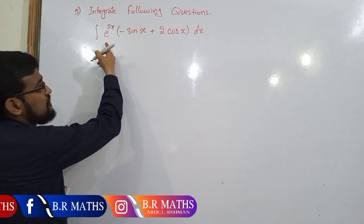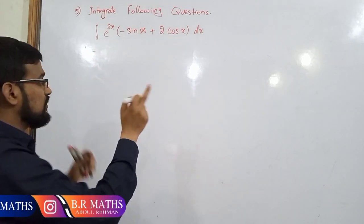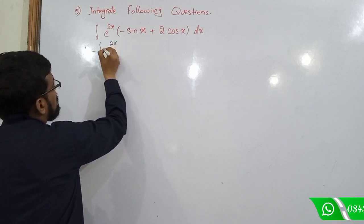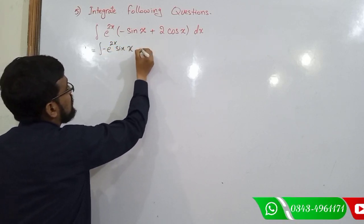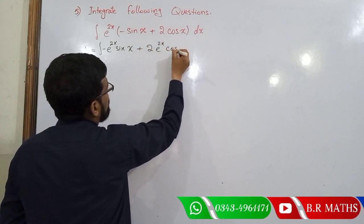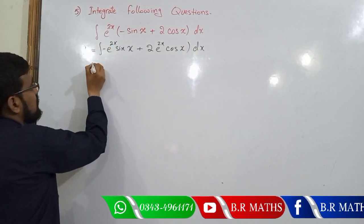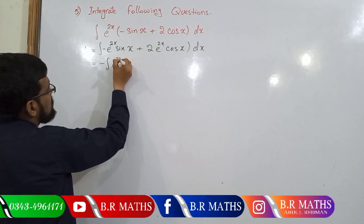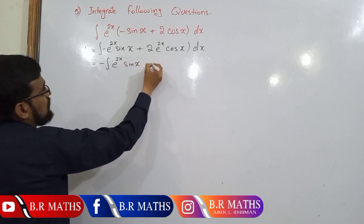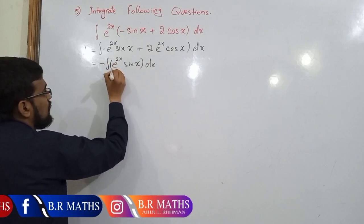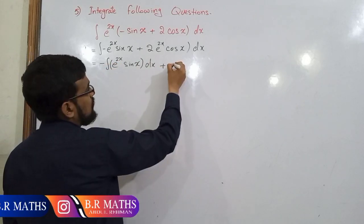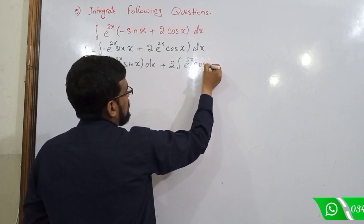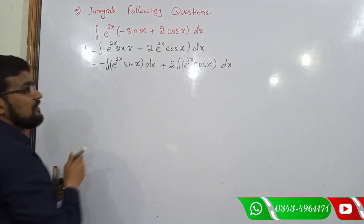The exponential function and trigonometric functions are derivative and integral of each other. First, open the bracket: minus sin x plus 2 exponential cos x, and negative integral of exponential function e^(2x) sin(x) dx, plus 2 integral of exponential 2x times cos x dx.